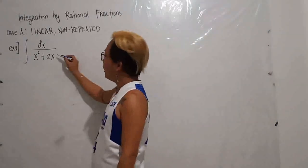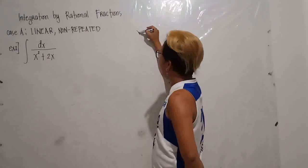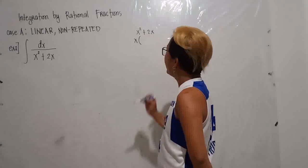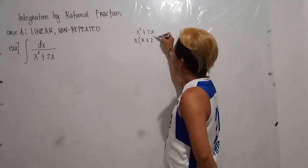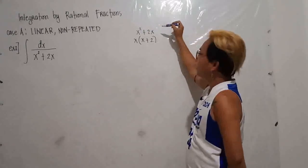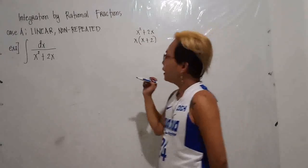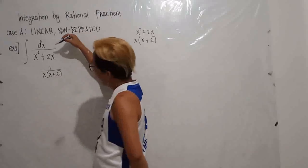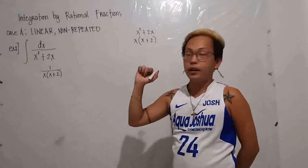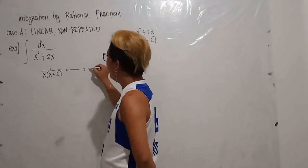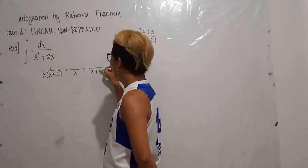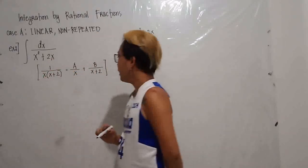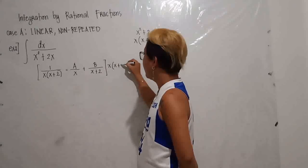First, factor the denominator: x² + 2x. The common factor is x, so it factors to x(x + 2). So instead of x² + 2x, the denominator is now x(x + 2). The integrand becomes 1/[x(x + 2)]. Separating into partial fractions, you will have A/x + B/(x + 2).